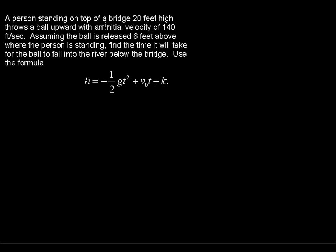A person standing on top of a bridge 20 feet high throws a ball upward with an initial velocity of 140 feet per second. Assuming the ball is released 6 feet above where the person is standing, find the time it will take for the ball to fall into the river below the bridge. Use the formula h equals negative one-half g t squared plus v sub zero times t plus k.